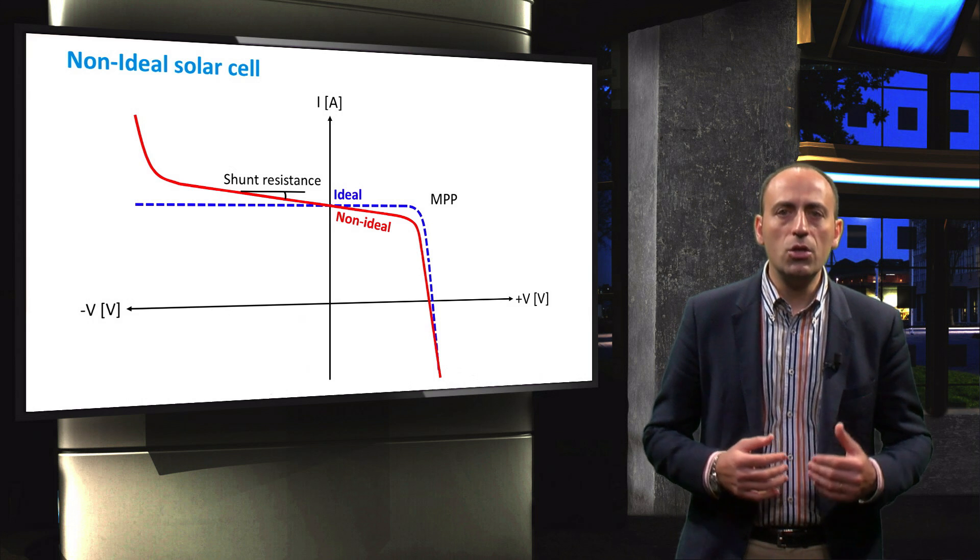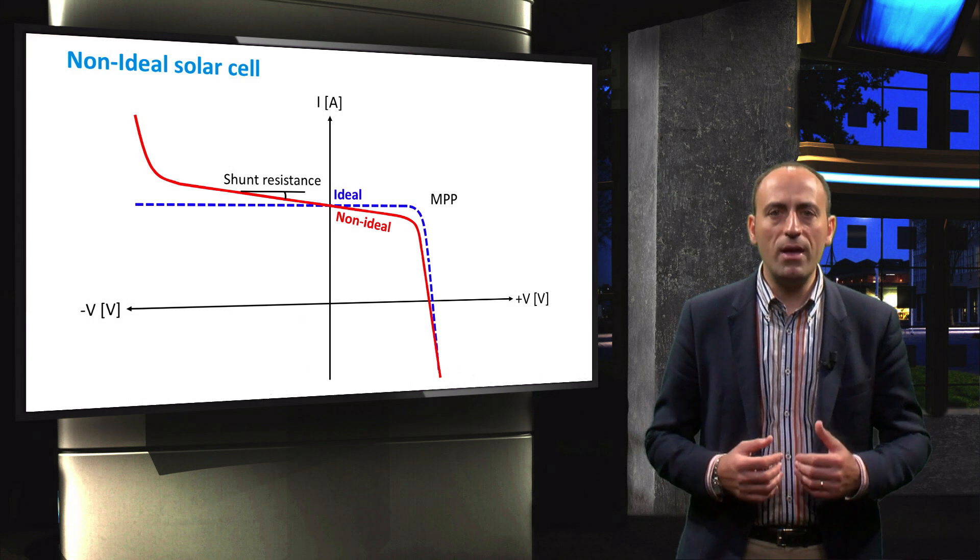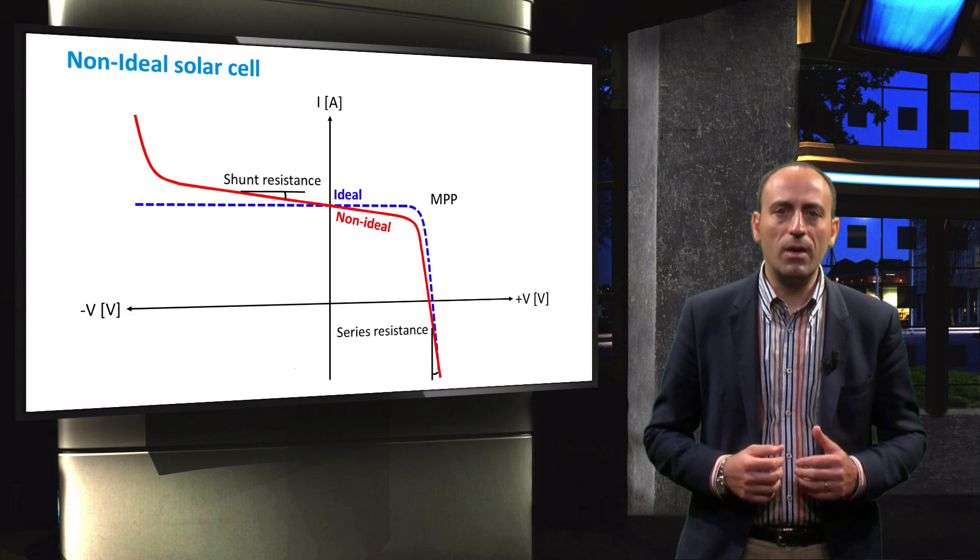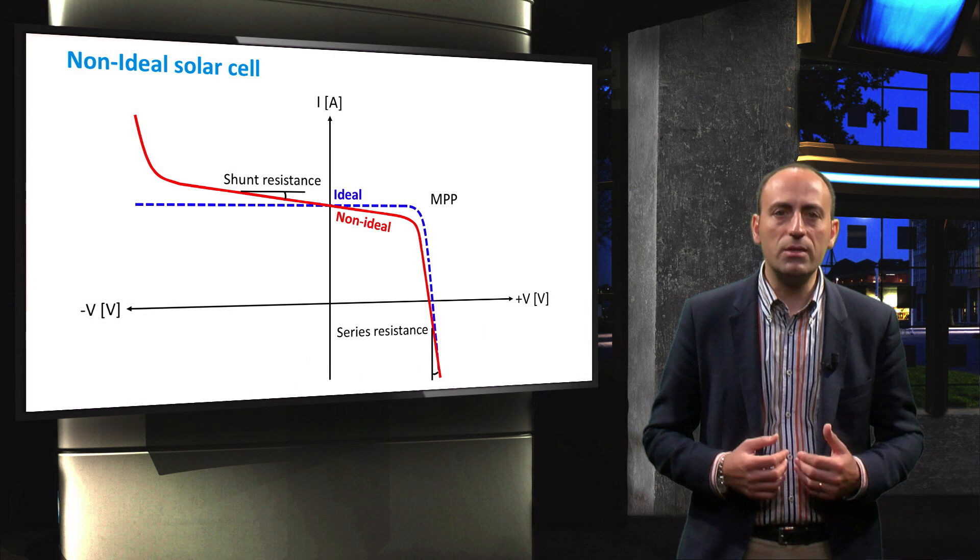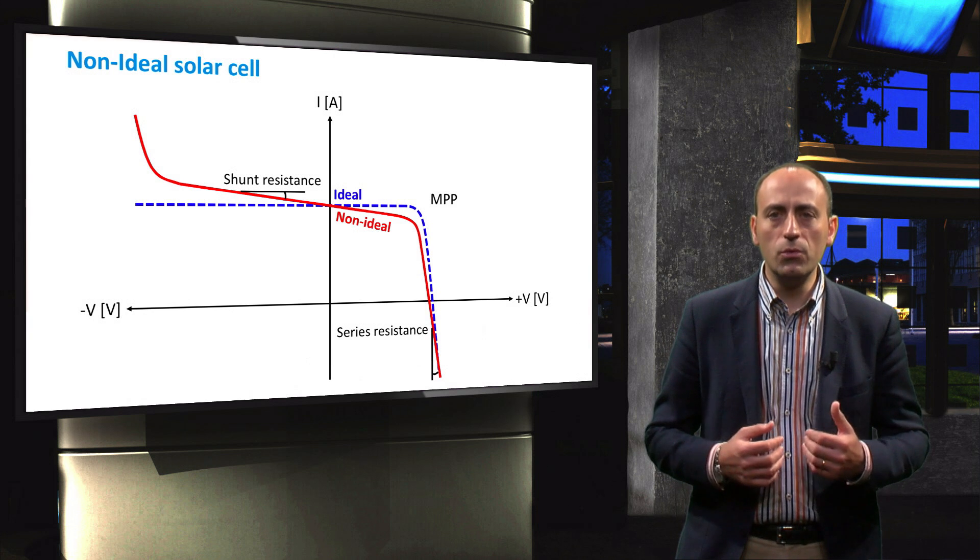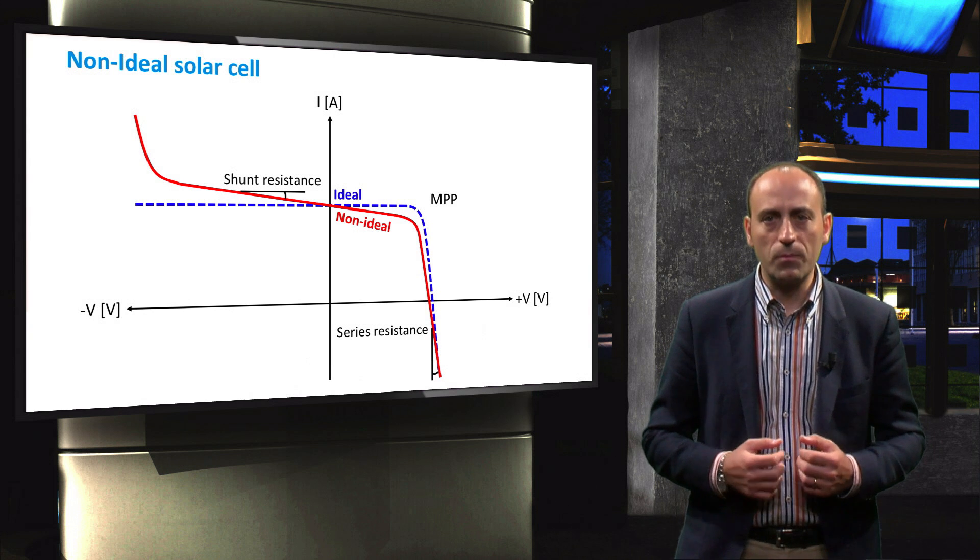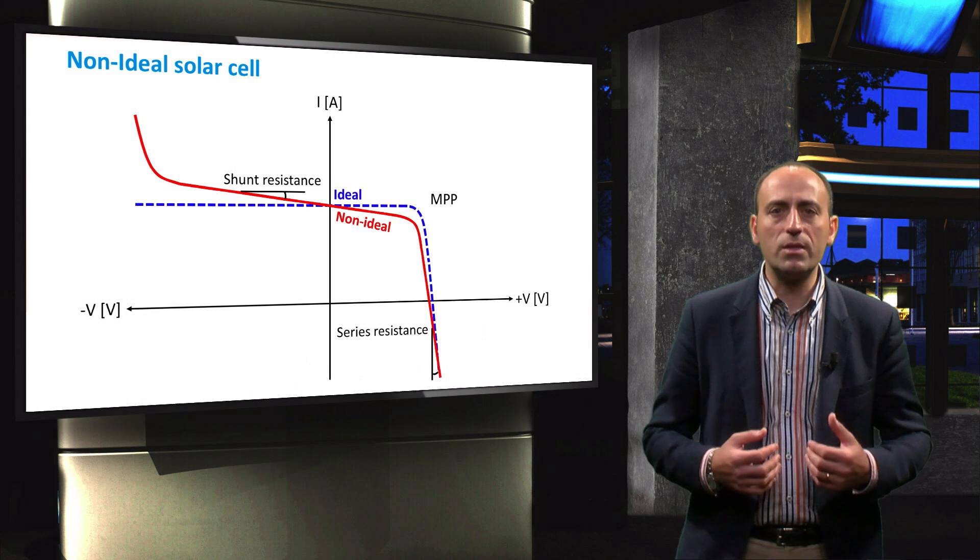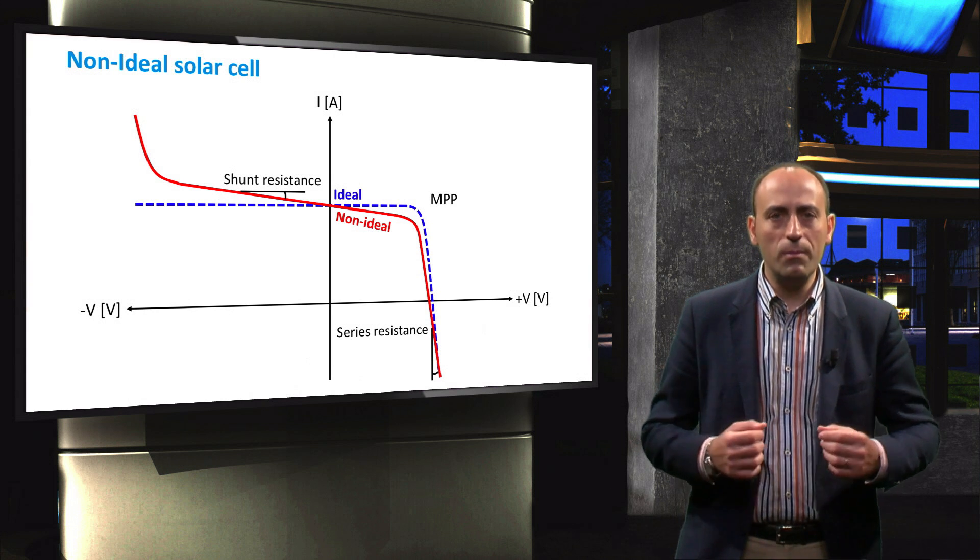The greater the shunt resistance, the smaller the slope and therefore the better the performance of the module. At the right side of the maximum power point, the cell experiences an extra slope due to an increased series resistance. This increased series resistance occurs when the solar cells are interconnected with metallic tabs.